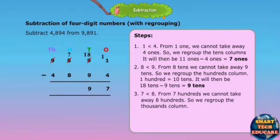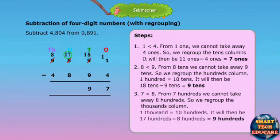7 is less than 8. From 7 hundreds, we cannot take away 8 hundreds. So we regroup the thousands column. 1 thousand is equal to 10 hundreds. It will then be 17 hundreds minus 8 hundreds is equal to 9 hundreds.